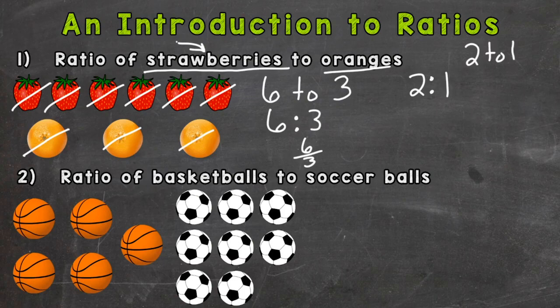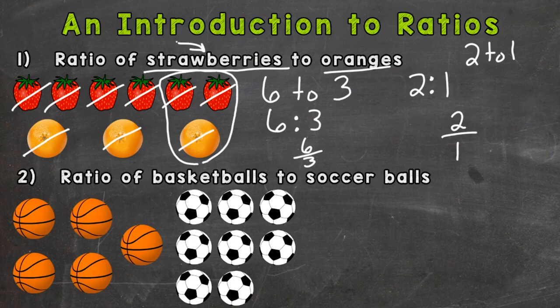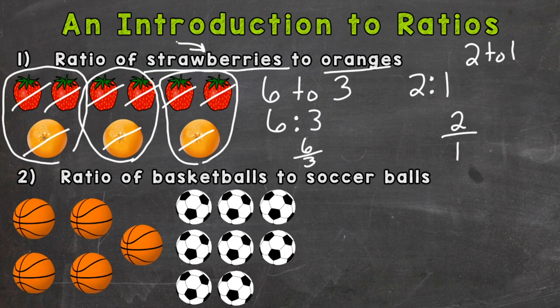So I'll do the colon way here first. I could put two to one or the fraction two to one. And let's take a look at our picture over here, and for every two strawberries there is one orange. So our simplified ratio matches our picture over there of the strawberries and oranges.